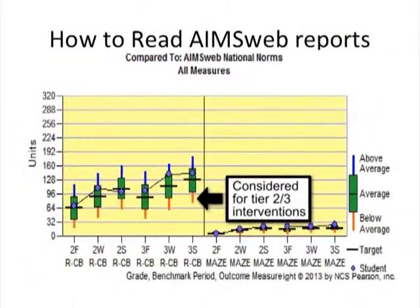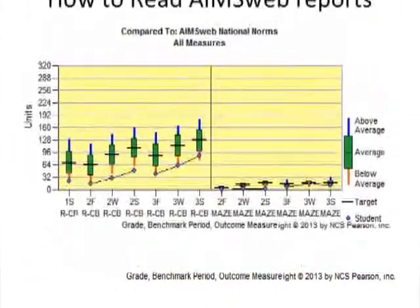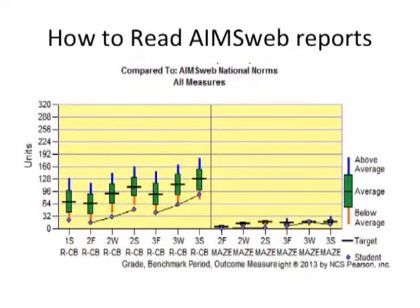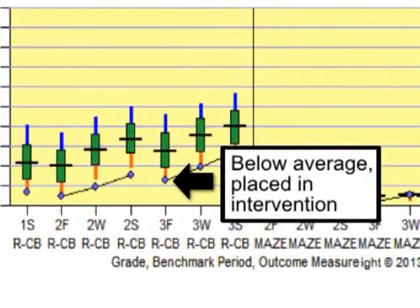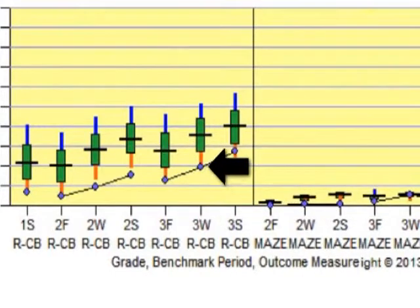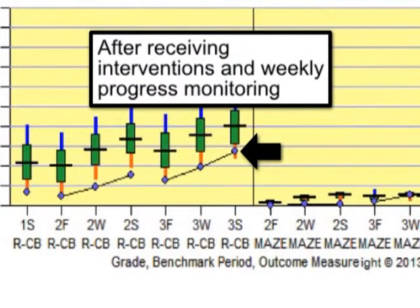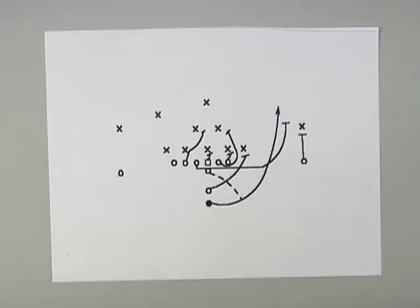If the student's dot fell within the orange line, they would be performing below average and would be considered for tier two or tier three interventions. This slide is an example of a student who scored below average in the fall and was placed in a skill-specific intervention. As you can see, by spring the student made progress after receiving interventions and weekly progress monitoring.